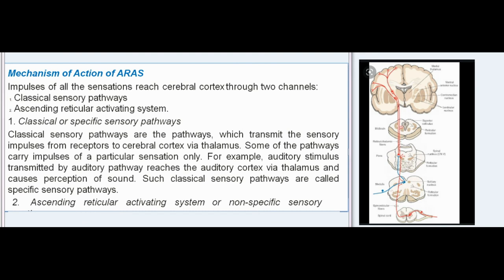Mechanism of action of arousal: Impulses of all sensations reach the cerebral cortex through two channels — classical sensory pathways and the ascending reticular activating system. Classical sensory pathways transmit sensory impulses from receptors to the cerebral cortex via thalamus. Some pathways carry impulses of a particular sensation only — for example, auditory stimulus transmitted by the auditory pathway reaches the auditory cortex via thalamus and causes perception of sound. Such pathways are called specific sensory pathways.